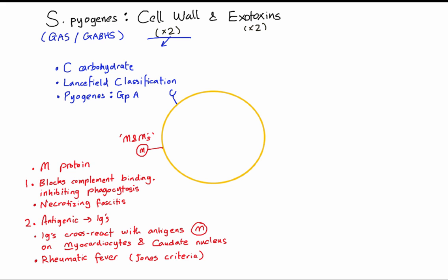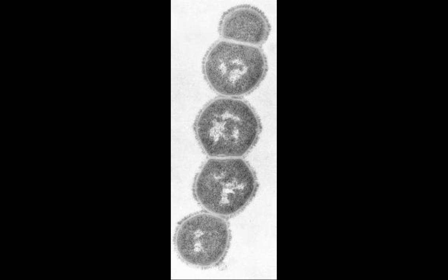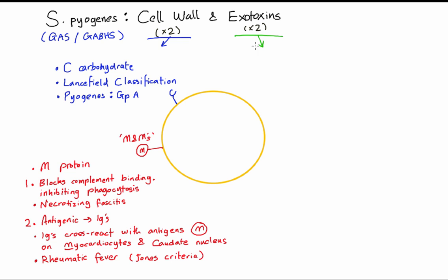Here is a scanning electron microscope of strep pyogenes, and you can see these fuzzy frilly things on the edge. Those are the M proteins.